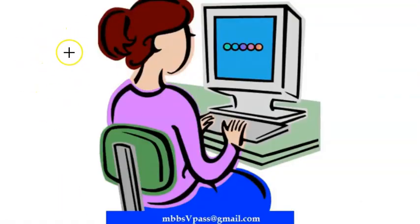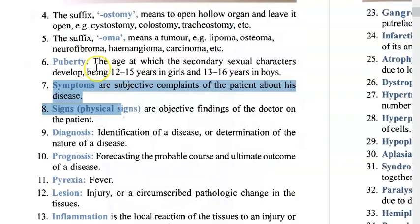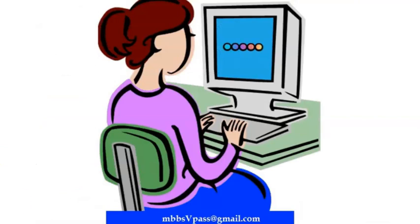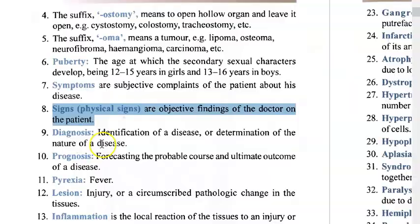Symptoms are what the patient comes with — pain, vomiting, diarrhea — things the patient reports. Signs are things that the doctor observes, such as tachycardia (heart beating very fast). The patient won't say they have ascites; the doctor detects it — so that becomes a sign.